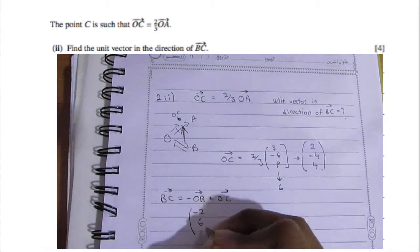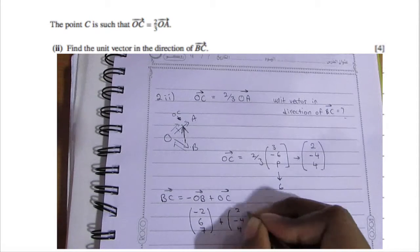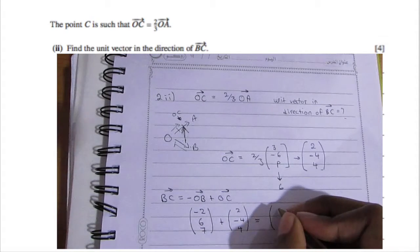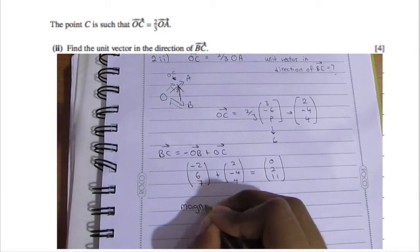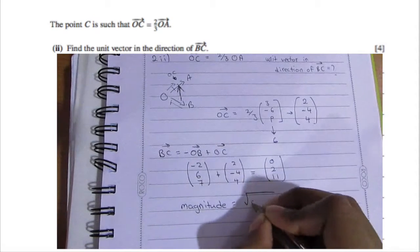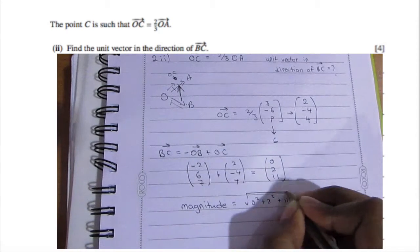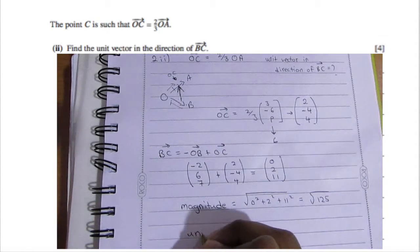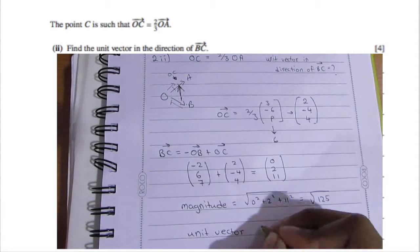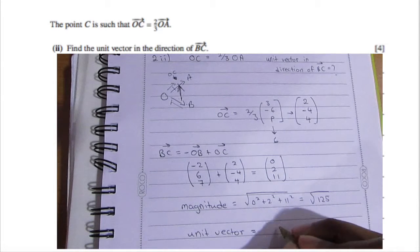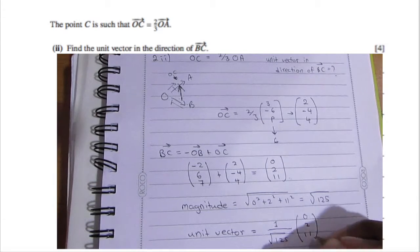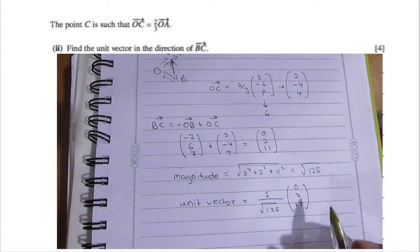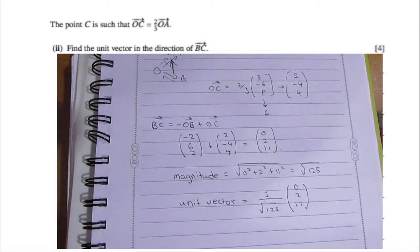Now find the magnitude of BC: √(0² + 2² + 11²) = √125. To get the unit vector, divide BC by its magnitude, giving (1/√125) × (0, 2, 11). That completes this question.